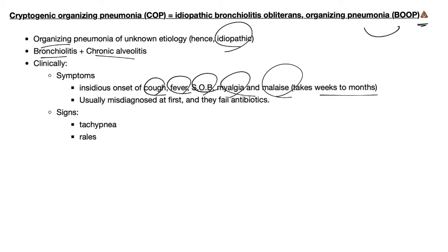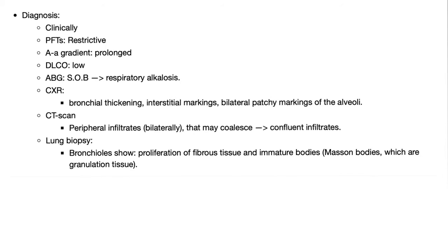The condition takes weeks to months and is usually misdiagnosed at first; patients fail antibiotics because it is not caused by bacteria. Signs are tachypnea and crackles (the old name was ronchi; today we call them crackles, and there are different types). How to diagnose cryptogenic organizing pneumonia: clinically, PFTs will show restrictive pattern, A-a gradient is prolonged because the problem is in the lung, and DLCO is low.